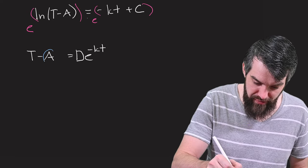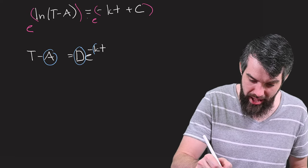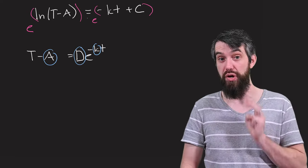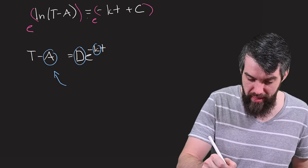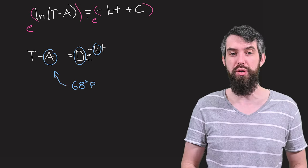Okay, so I have an A I need to figure out, I have a D I need to figure out, and I have a K I need to figure out. Three different constants. One of them I already know. One of them was the ambient temperature, and that was that 68 degrees Fahrenheit that we computed.